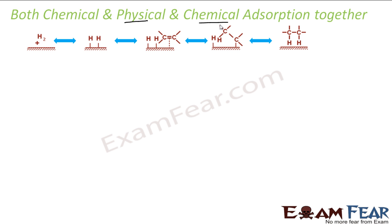For example, consider hydrogen and nickel. When you do hydrogenation of any substance, you use hydrogen and a nickel catalyst — a nickel plate that provides the surface. First, hydrogen gas is adsorbed on nickel by van der Waals force — that is physical adsorption. Then hydrogen molecules dissociate to form hydrogen atoms, which stick to the nickel plate — that is chemical adsorption.